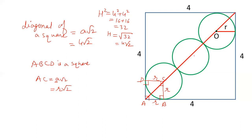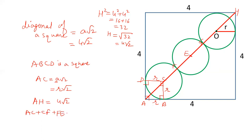Now let's label some points. We'll take points E, F, G, O and H. Now A, C is R root 2. The diagonal A, H is 4 root 2. And that is equal to: A, H equals A, C plus C, F plus E, F plus E, G plus G, O plus O, H.